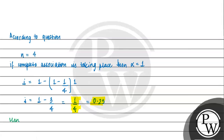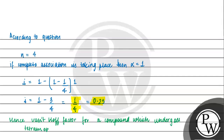Hence, the Van't Hoff factor for a compound which undergoes tetramerization in an organic solvent is 0.25 or 1/4. I hope you understood it well. Best of luck. Thank you.